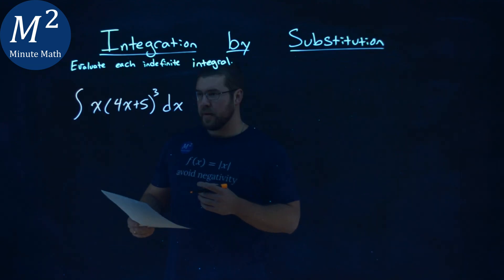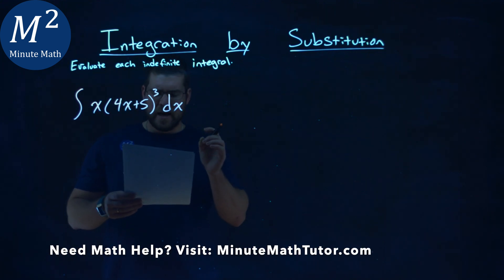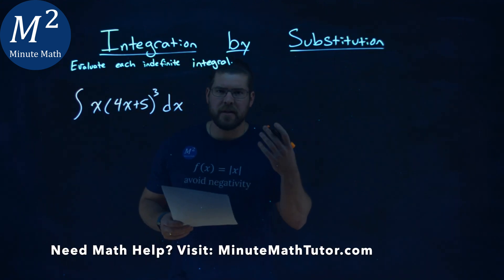We're given this problem right here: the integral of x times 4x plus 5 to the third power dx, and we want to find this indefinite integral.